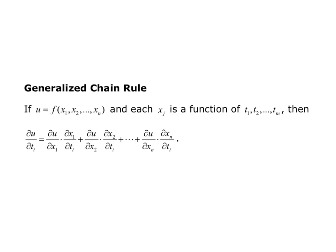The generalized chain rule: if u equals f of x1, x2, up through x sub n, and each x sub j is a function of t1, t2, up through t sub m, then partial u partial t sub i equals partial u partial x sub 1 times partial x sub 1 partial t sub i, plus dot dot dot, plus partial u partial x sub n times partial x sub n partial t sub i. Notice that it's always the derivative of the outside function with respect to a certain x variable times the derivative of that x variable with respect to the given t variable.